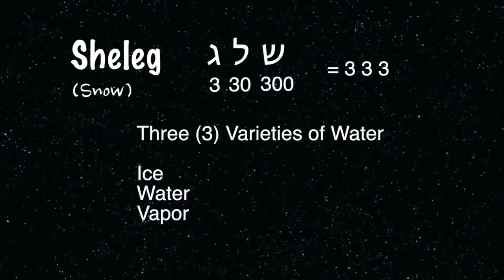So you take Sheleg — Sheleg is snow — and you combine the values of the letters in Sheleg. Sheleg is water and it comes out to three, three, three. The varieties of water are three: ice, water, vapor.